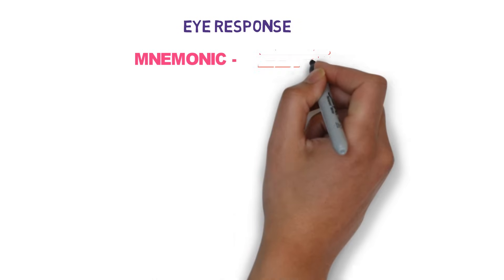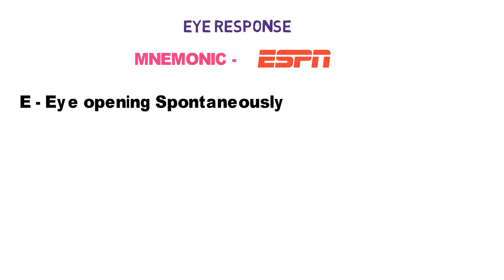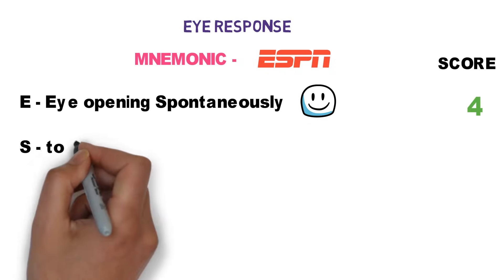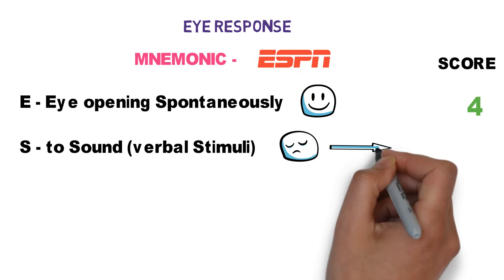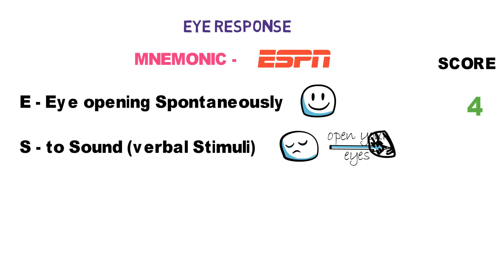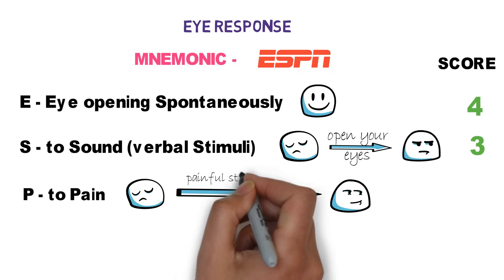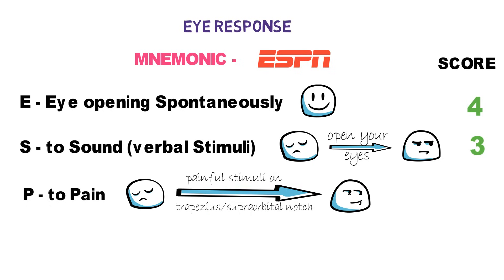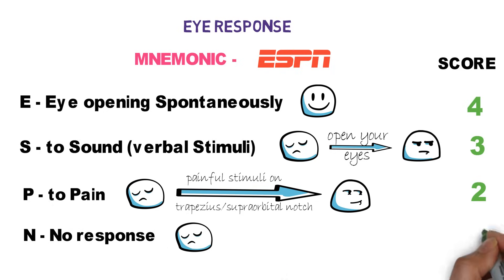You can memorize eye response with the sports channel mnemonic ESPN. E stands for eye opening spontaneously — if the patient spontaneously opens their eyes, the eye score is 4. S stands for sound, meaning eye opening to verbal stimuli — if the patient opens their eyes when called or asked, the eye score is 3. P stands for pain — if the patient opens their eyes to a painful stimulus such as pressing the trapezius or supraorbital notch, the eye score is 2. If there is no response, the eye score is 1.